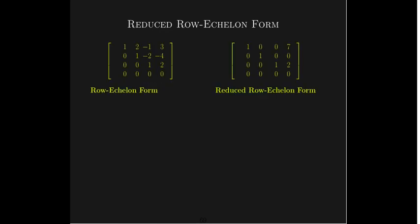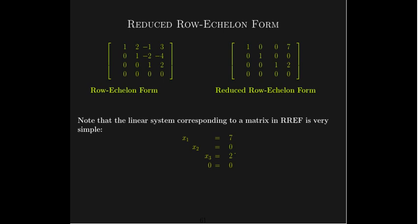Let's look at a matrix in row echelon form versus reduced row echelon form. In reduced row echelon form, every number above and below each leading 1 in that column is zero. And if we're talking about an augmented matrix, a matrix in reduced row echelon form has a very simple structure — in fact, it reveals the solutions directly. It shows us that x1 equals 7, x2 equals 0, and x3 equals 2.